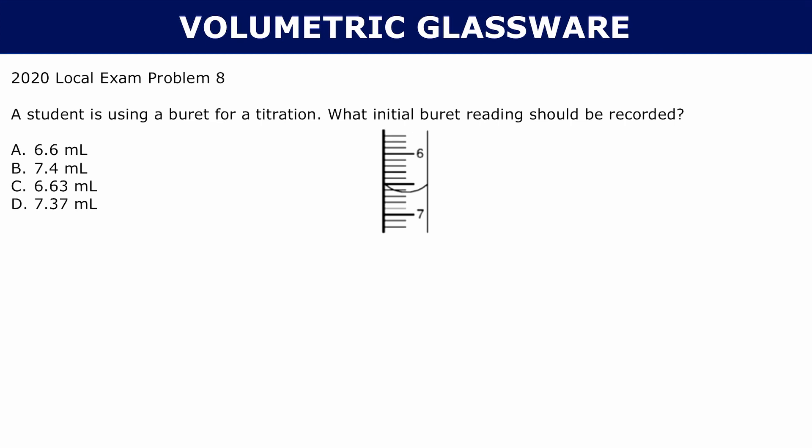In the case of this buret here, we're certain up to 6.6. That marking right there tells us that it's 6.6. But you realize that the water level goes a bit below that. So let's estimate what that value might be. And I think that value looks like 6.63 mils. And that is answer choice C.